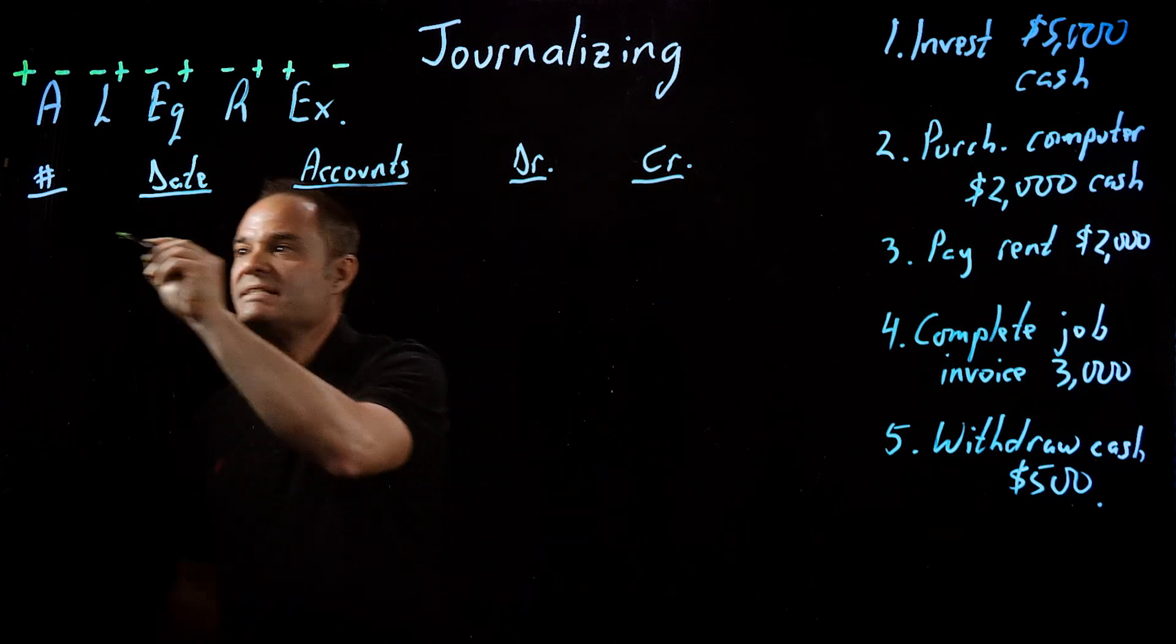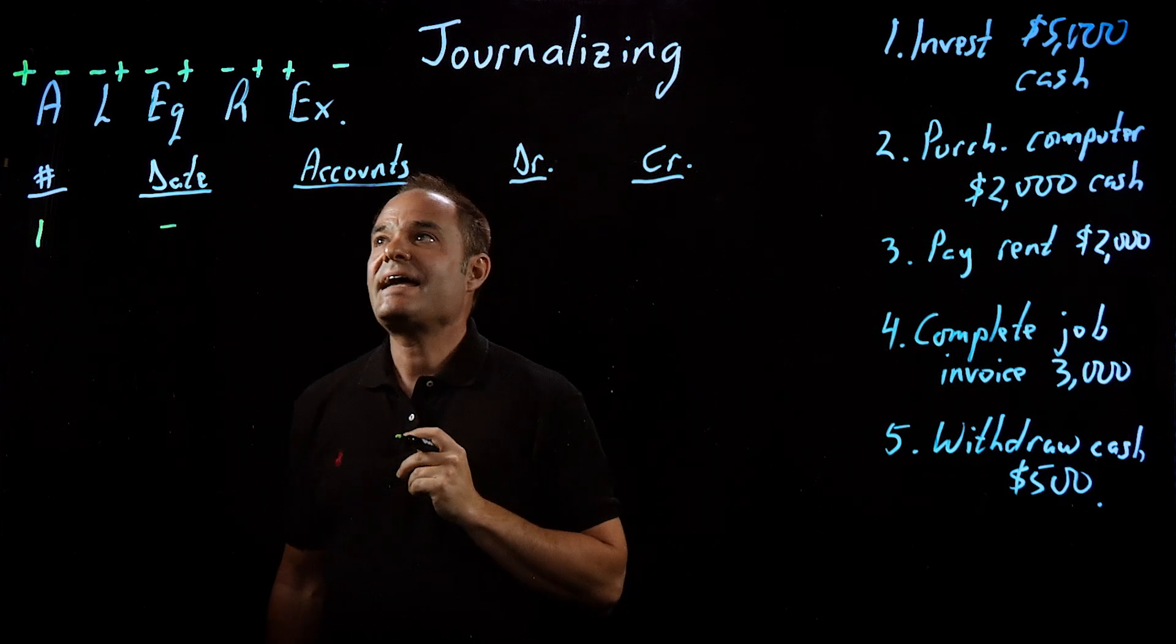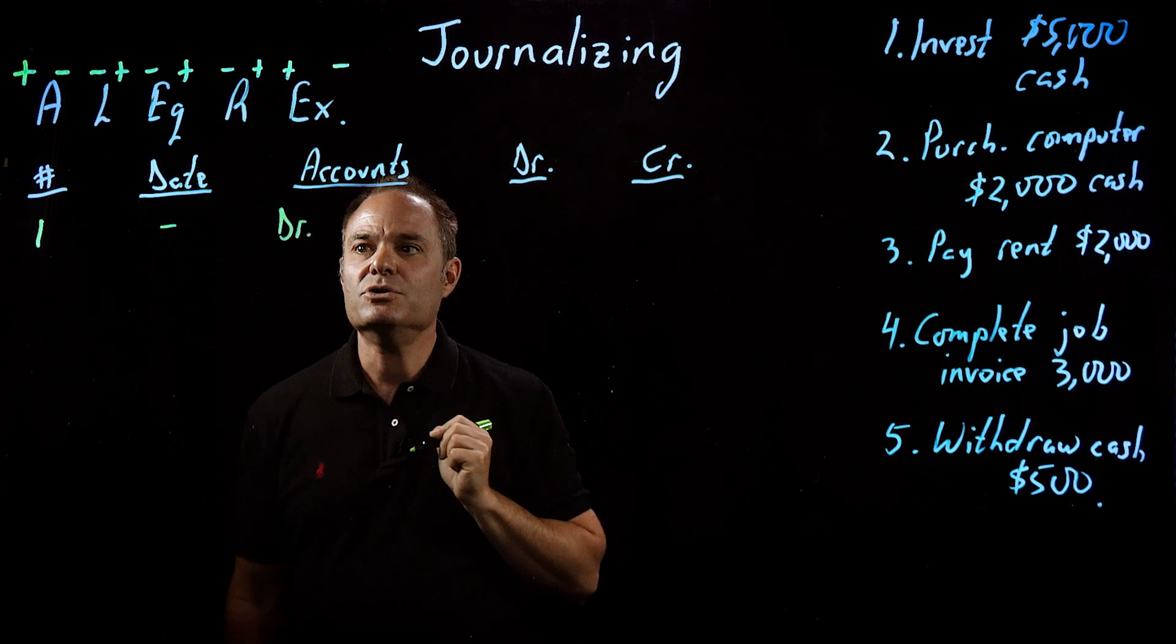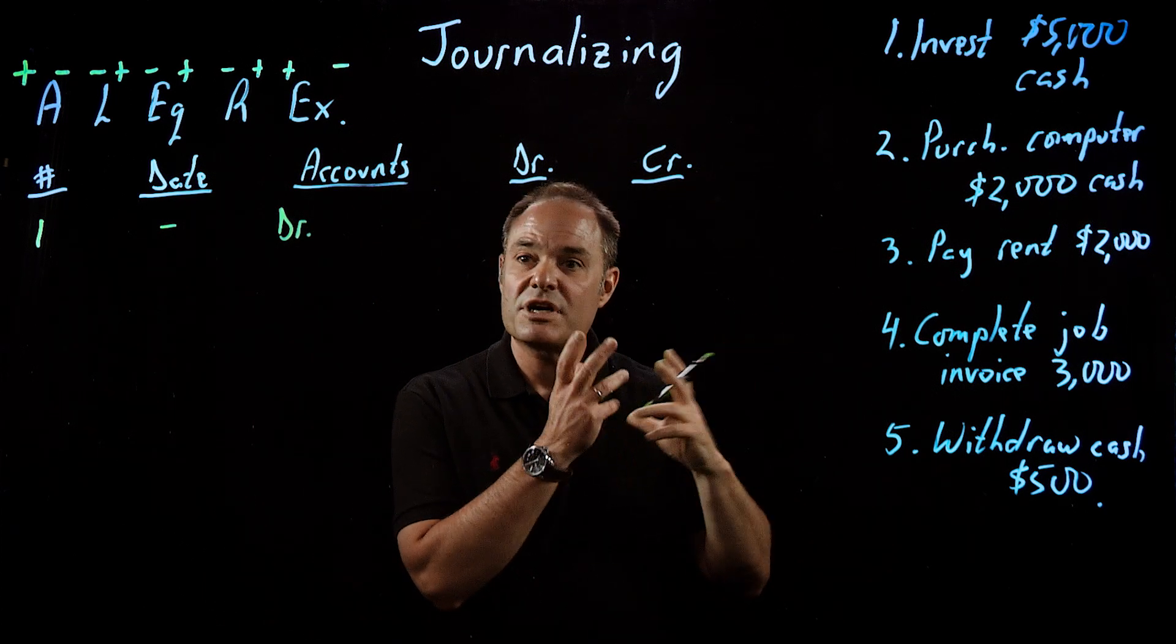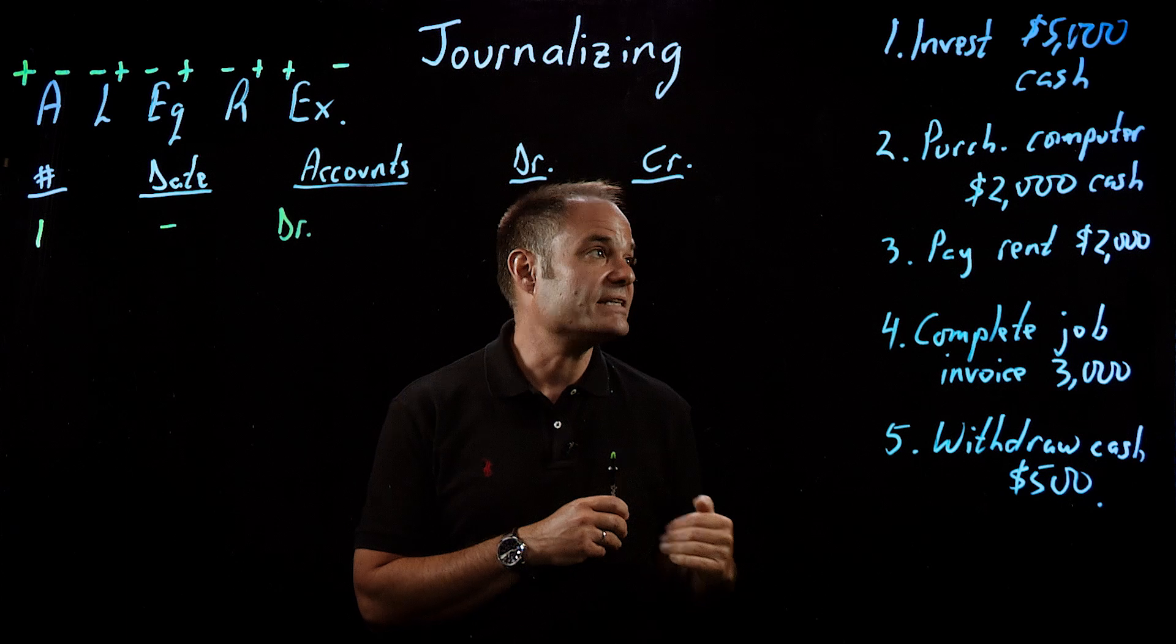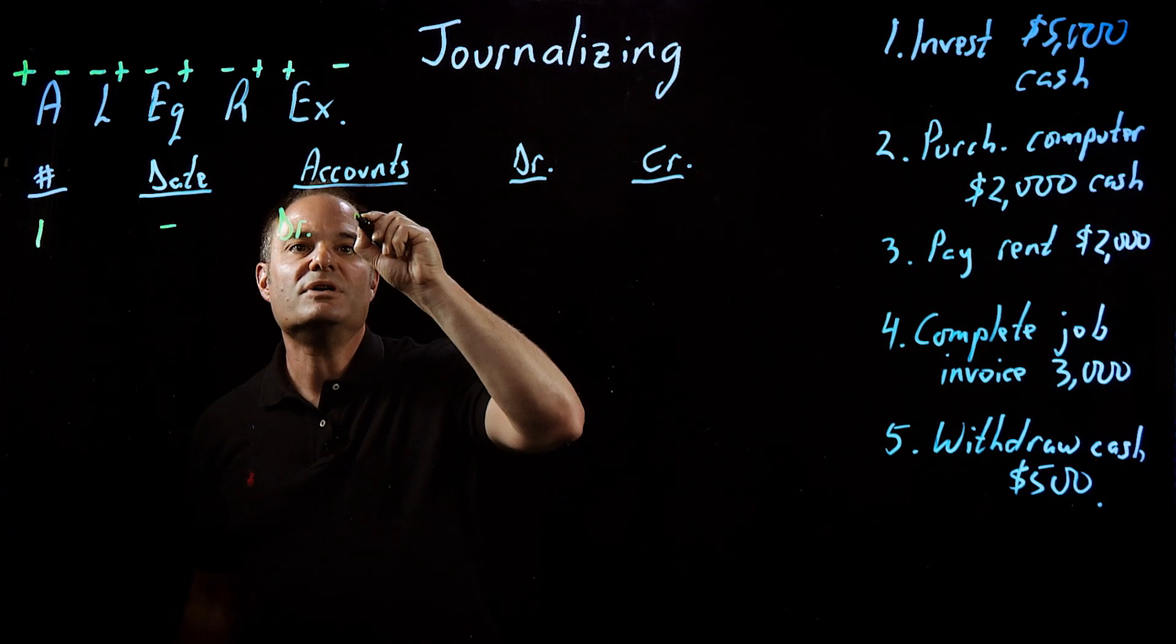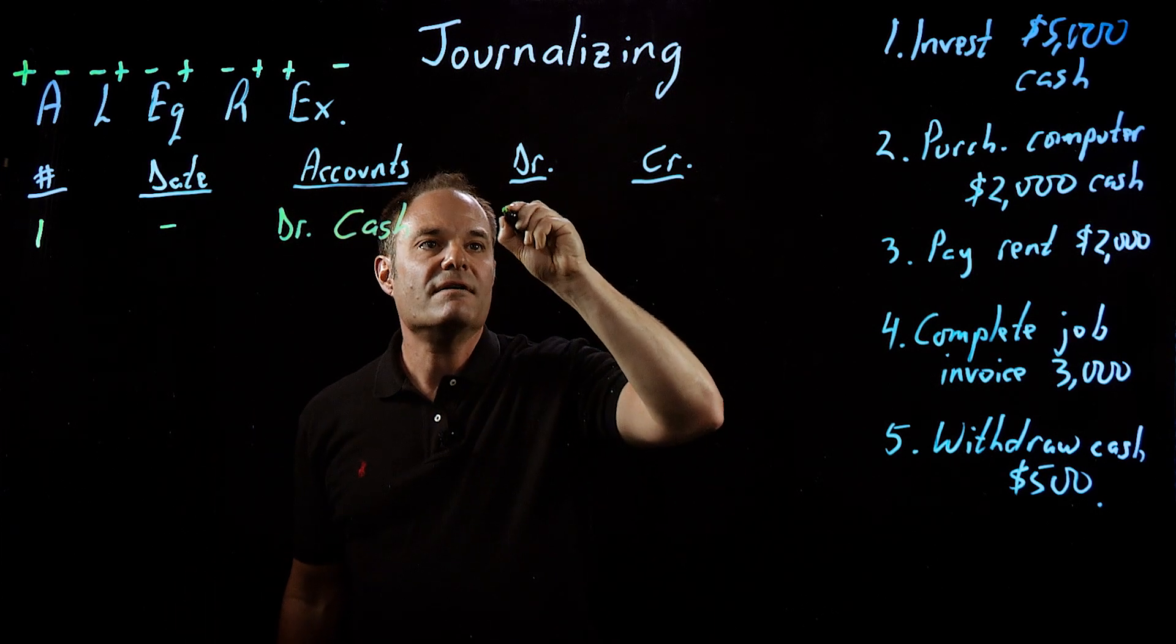Let's start with the first one. We have transaction number one. I'm just going to ignore the date for the moment. We're investing cash, so cash is the first account that we're going to use. Just as by way of tradition in organizing our journal, we tend to write the debits first, and then the credits. I'm going to debit cash. My cash is increased. Cash is an asset. It's increased, so it's a debit.